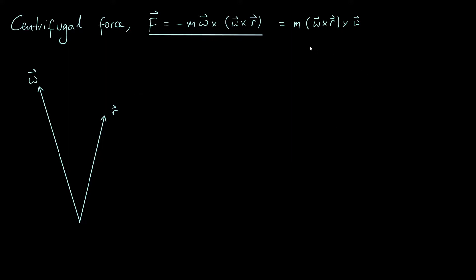The centrifugal force equation has two cross products: omega cross r, and then we cross that whole thing with the omega vector. Let's think about the first cross product, omega cross r. The way I like to think about this is: imagine turning your omega vector towards your r vector and imagining what direction a screw would go in. Here, if we turn omega towards r, we'd be turning it clockwise, so the screw goes into the screen. We represent that as a circle with a cross through it — that represents the vector omega cross r going into the screen.